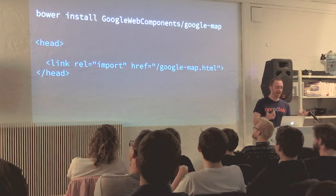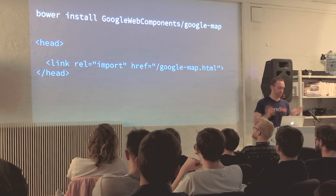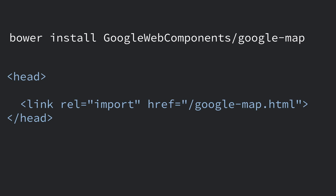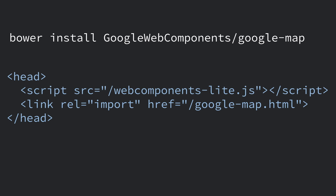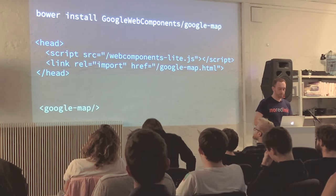Once we've installed this, we add an HTML import — instead of link rel=stylesheet, we use rel=import. That lets us import this thing and now we have access to the new tag on the page. Obviously we don't want to support only Chrome, so we add the polyfill, and all of that put together means that when we put the google-map tag on our page, we're going to get an actual working Google Map.